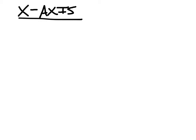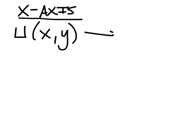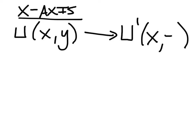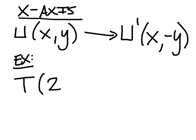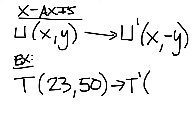Let's look at reflections over the x-axis. If you reflect over the x-axis, let's say we started out with point U at coordinates x and y. After the reflection, we would have U prime — the x is going to stay the same, and the y now is the opposite of what it was. For example, if I were to look at point T at (23, 50), after the reflection over the x-axis, T prime would be: 23 stays the same, but the 50 is now negative.